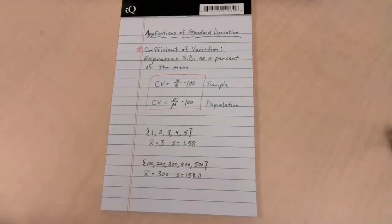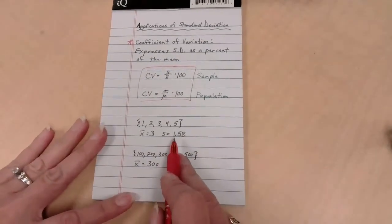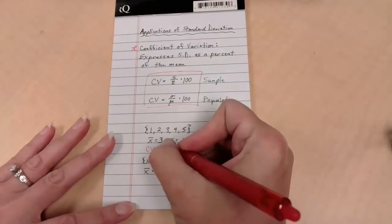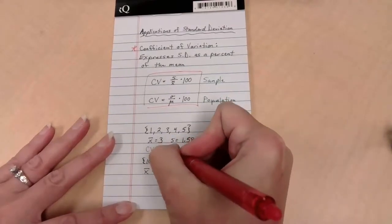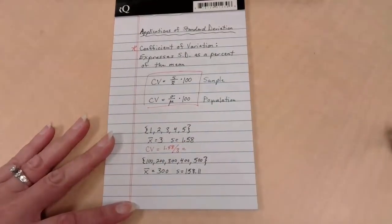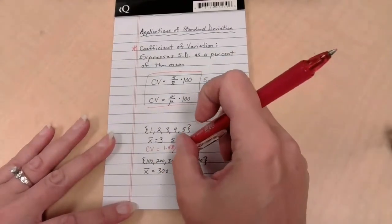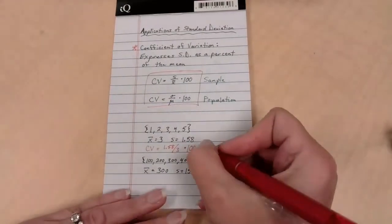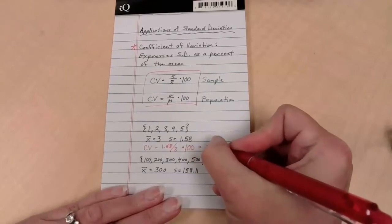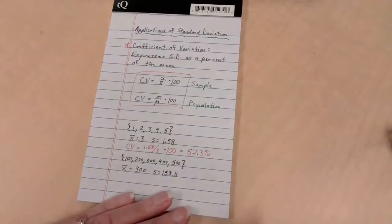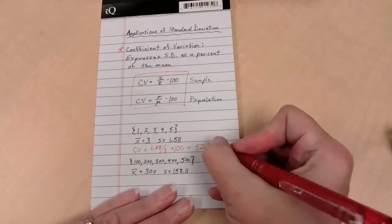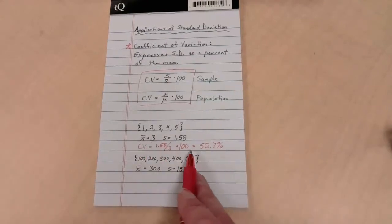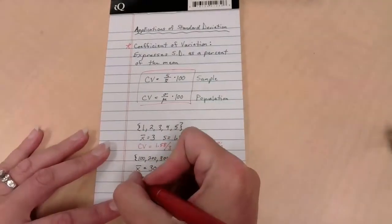But if I want to compare these two sets and say what am I really looking at here? If I compare the standard deviation to the mean, CV is what I'm using to represent coefficient of variation. We are talking that is going to be the S, 1.58, our standard deviation, divided by X bar, which is 3, times 100. It's going to give us 52.7%. So we are saying that when we compare the amount of variation to the center of the data, we've got 52% of a variance.